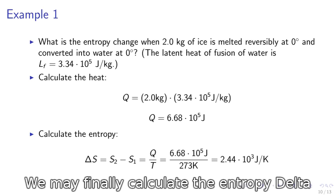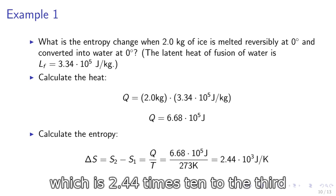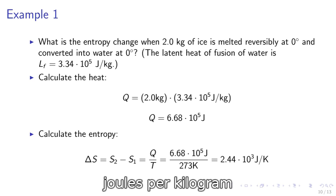We finally calculate the entropy, delta S equals S2 minus S1 equals Q over T, which is 2.44 times 10 to the third joules per Kelvin.